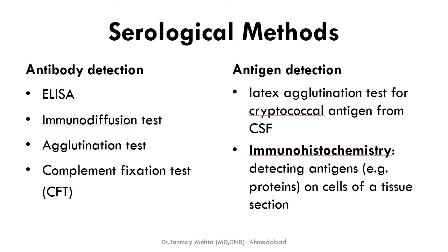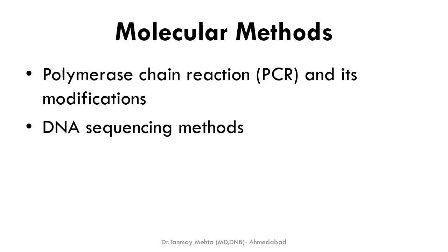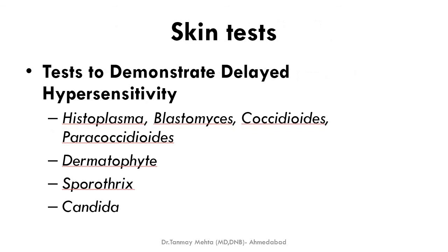Serological methods detect either antibody or antigen. Antibody detection methods include ELISA, agglutination test, complement fixation test, and immunodiffusion test. For antigen detection, latex agglutination is used for CSF. Immunohistochemistry can detect antigens on tissue section cells. PCR and its modifications, as well as sequencing methods, can also be used but are expensive.